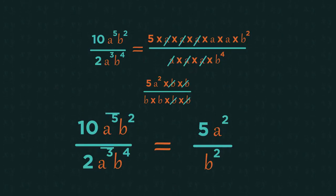You don't need to write out all of the letters every time. You can just look at the powers. So, 5 subtract 3 leaves 2 on top. And 4 on the bottom subtract 2 leaves 2 on the bottom.